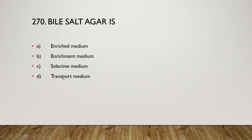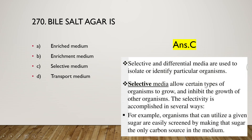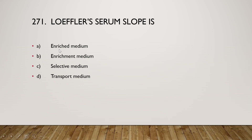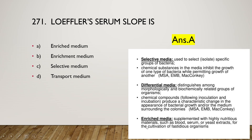BSALT agar is a selective medium. Selective media allow certain types of organisms to grow while inhibiting others; selectivity can be accomplished by making a specific sugar the only carbon source in the medium. Loffler serum slope is an enriched medium — supplemented with highly nutritious materials such as blood serum or yeast extract for cultivation of fastidious organisms.